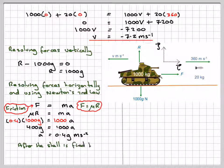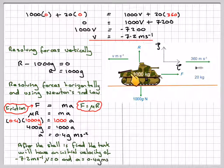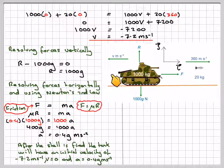After the shell is fired, the tank will have an initial velocity of minus 7.2, so it's moving in that direction, but the acceleration will slow it down, and eventually it will stop. The acceleration will be 0.4G meters per second. The acceleration is acting in the opposite direction to the velocity.